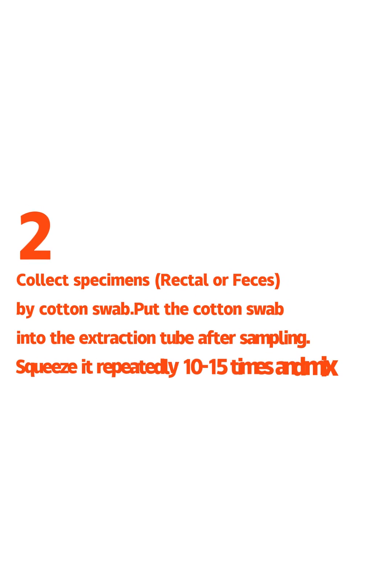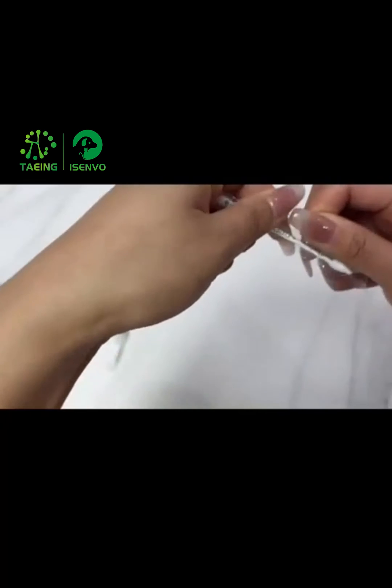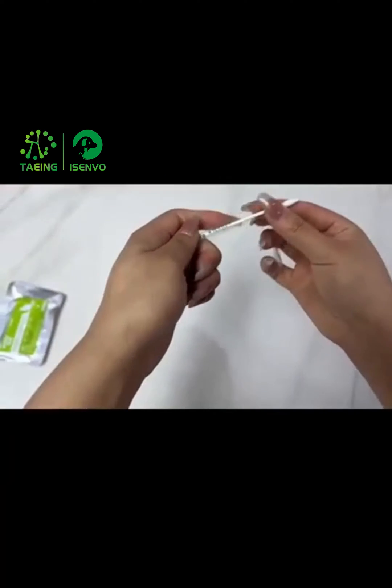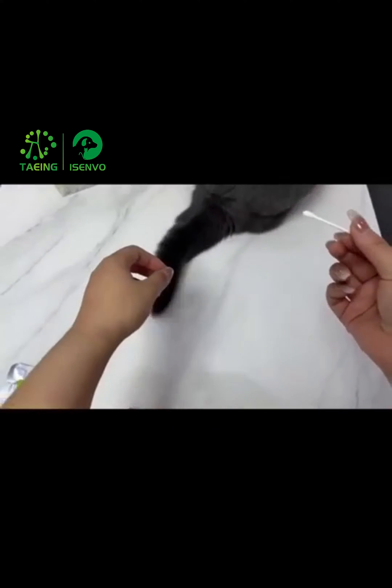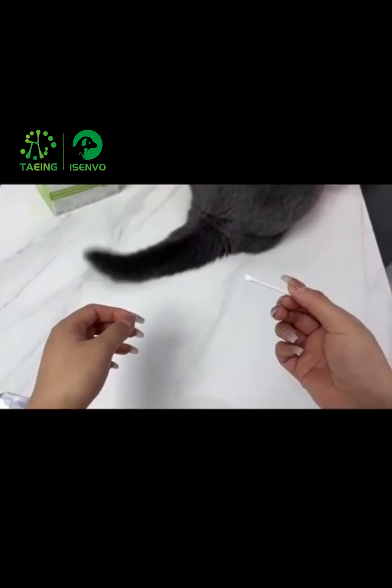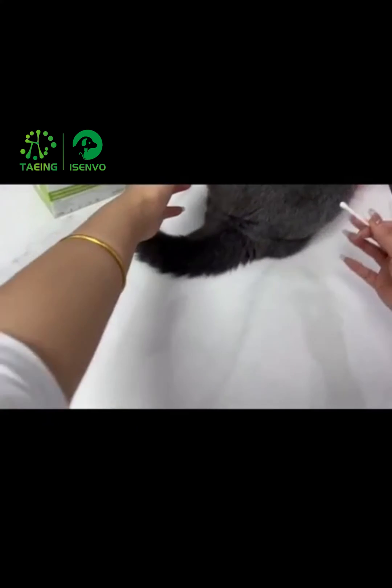Step 2. Collect specimens: rectal or feces. By cotton swab, put the cotton swab into the extraction tube after sampling. Squeeze it repeatedly 10 to 15 times and mix well.